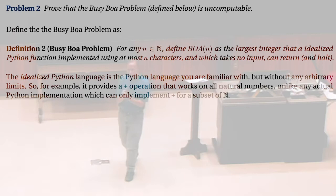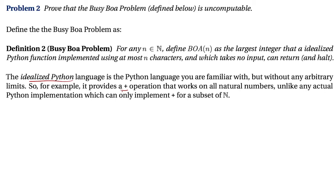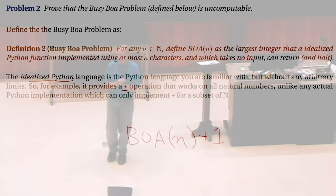The reason there's a straightforward way to do this is that, because we're doing idealist Python, we have plus. So we can always add something to the output of the busy beaver function. What should n be there for this to get a contradiction? So we need to have a function.